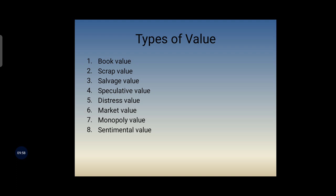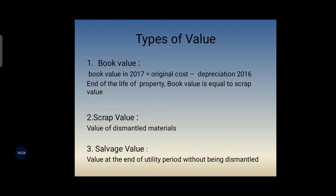Types of value are classified as: book value, scrap value, salvage value, speculative value, distress value, market value, monopoly value, and sentimental value. Book value is the amount shown in the account books, obtained after deduction of depreciation. The book value at a particular year equals original cost minus depreciation up to the previous year — for example, book value in 2017 equals original cost minus depreciation in 2016. At the end of the life of the property, book value equals scrap value.